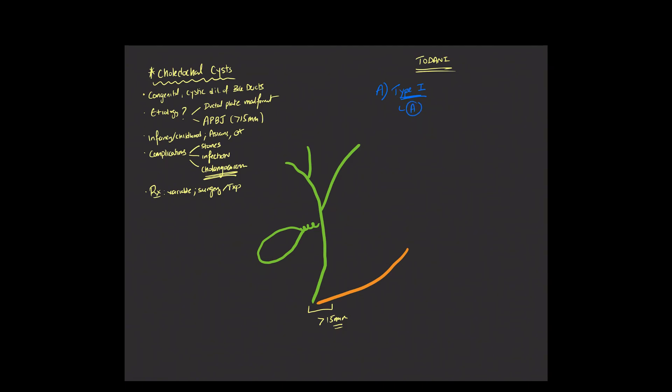Type 1a involves cystic dilatation of the entire extrahepatic biliary tree, as can be seen over here in this drawing schematic.